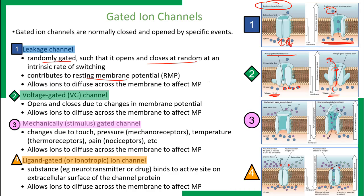The third type is the mechanically or stimulus-gated channel. In the absence of a stimulus, the mechanically gated ion channel is closed. Once activated by a stimulus — which can be touch, pressure, temperature, or pain — it opens. This is a nonspecific ion channel: once the mechanically gated channel opens, it allows sodium to diffuse into the cell and potassium to diffuse out of the cell, all through the same ion channel.